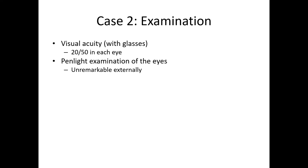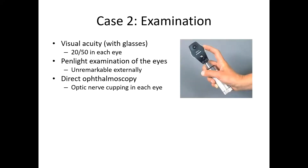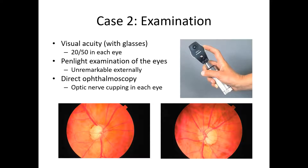Visual acuity measures 20/50 in each eye with correction. Penlight examination of the anterior segment of each eye is unremarkable. Direct ophthalmoscopy is utilized to look at the fundus of each eye, and optic nerve cupping is noted. Shown in the bottom images are the optic nerves of the right and left eye. In the right eye, the optic nerve rim and optic nerve cup can be seen, the latter being the yellower, less pink region. In the left eye, this optic nerve cup is also present. In both cases, the optic nerve cup is quite large, indicating significant loss of parts of the optic nerve.